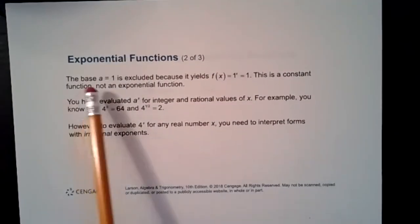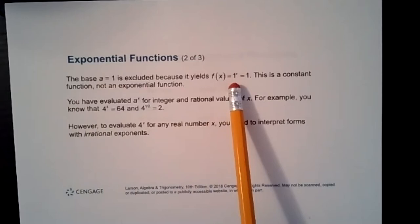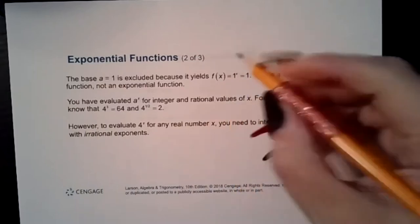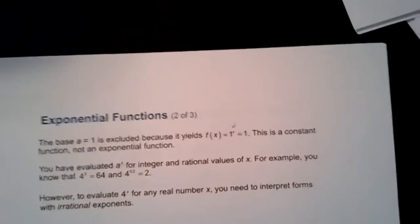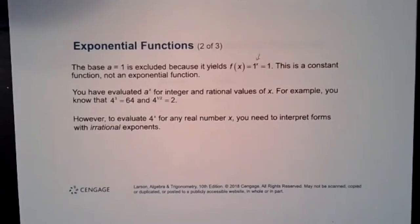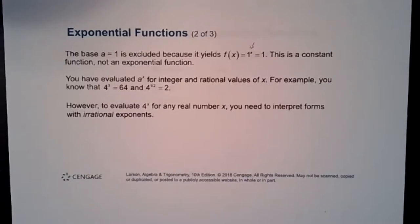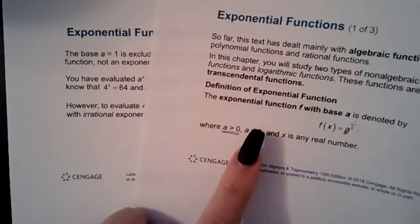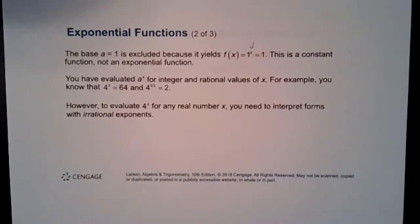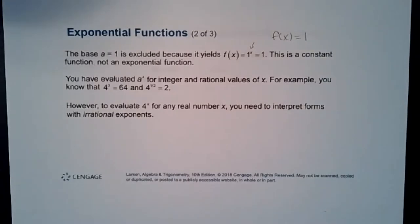When the base equals one, the function f(x) = 1^x gives you one regardless of whether the exponent is positive, negative, or zero. Therefore it equals one for all x values — that's why it's called the constant function. The definition specifies that a cannot equal one because then you're not talking about an exponential function, just the constant function f(x) = 1.